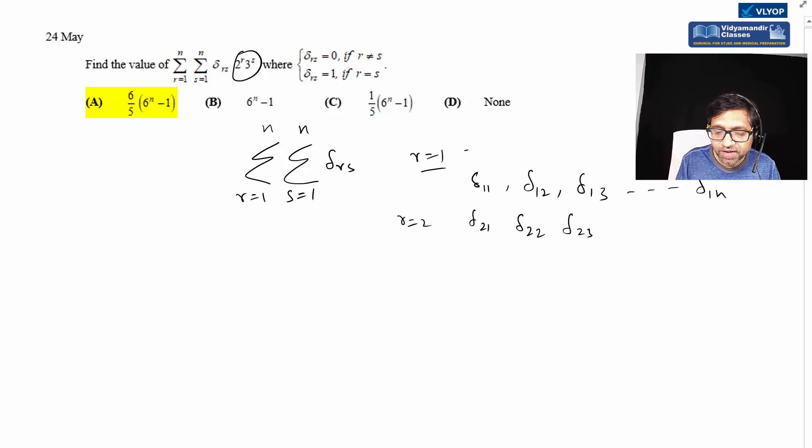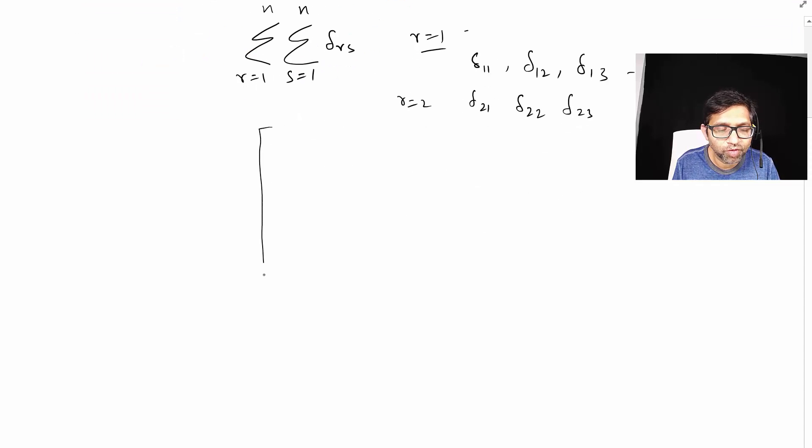A good way to understand this is to write it in grid form or matrix form. Let r be the rows - first row r equals one, second row r equals two, and so on. Let s be the columns starting from one - first column s equals one, second column s equals two, third column, and so on.